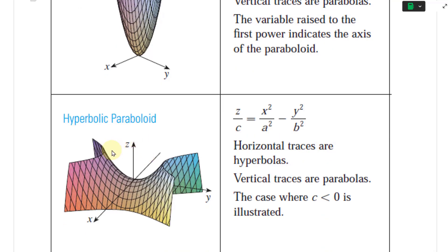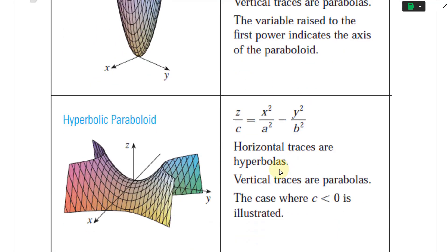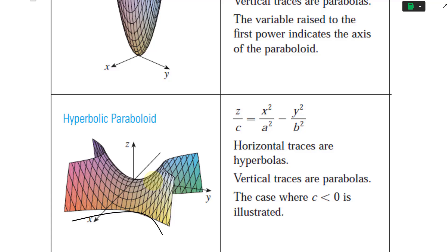For the hyperbolic paraboloid — the saddle shape — the equation is z/c = x²/a² − y²/b². The horizontal traces are hyperbolas, and the vertical traces are parabolas. If you cut it vertically you get parabolas going down in one direction and parabolas going up in another, and then hyperbolas going across in the other directions. This is how a 3D drawing is typically made.